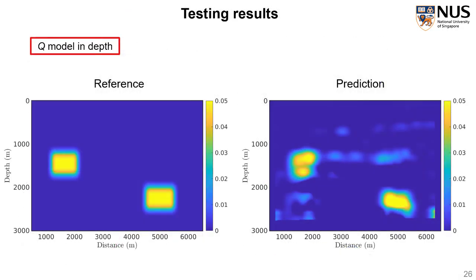Based on the attenuated travel time estimation in the data domain, we can also perform a running local linear regression process to invert for 1 over Q, followed by a time to depth conversion. The predicted Q model or 1 over Q model is obtained like this. Although the shape of the anomalies are a bit distorted, the position of the Q value and the Q anomaly are very much preserved.